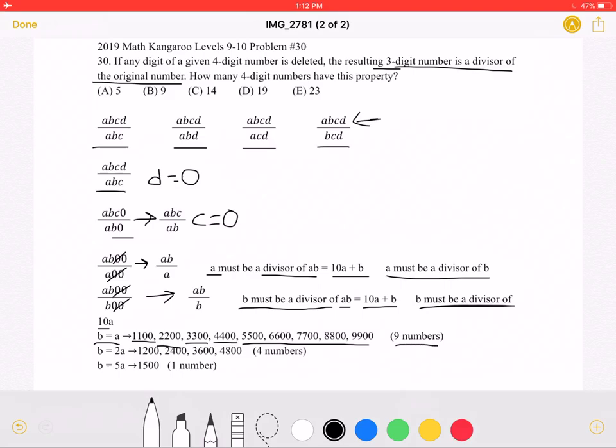Or we could have B equal to 2A, which would give us 1200, 2400, 3600, and 4800. And again, in this case, we know that A must be less than or equal to 4 because it's a two-digit number, so it wouldn't make sense for A to be 5 because then B would be 10 and that wouldn't work. So A must be less than or equal to 4, which gives us four numbers.